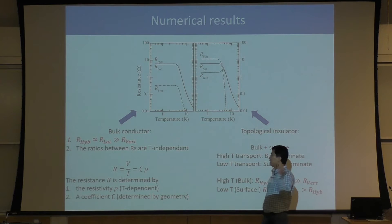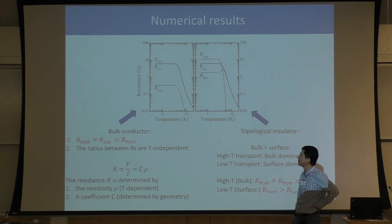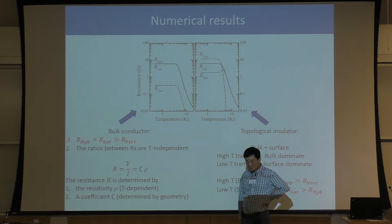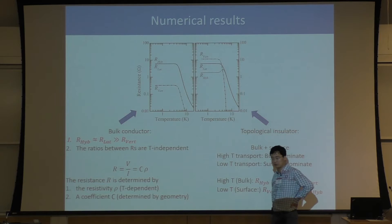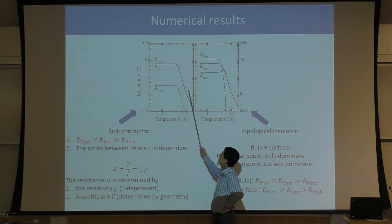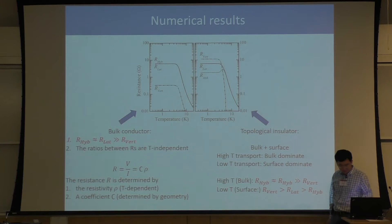We also did numerical simulations using the same geometry as the experimenter used, assuming two different scenarios. On the left-hand side, I assume SMB6 is a bulk insulator, with resistivity that increases and eventually saturates at low temperature. In this case, all three four-terminal resistances follow the same temperature dependence.